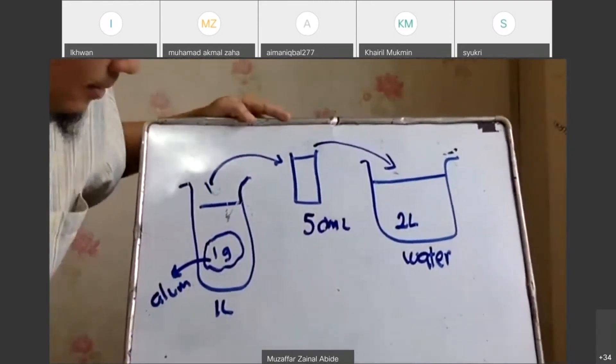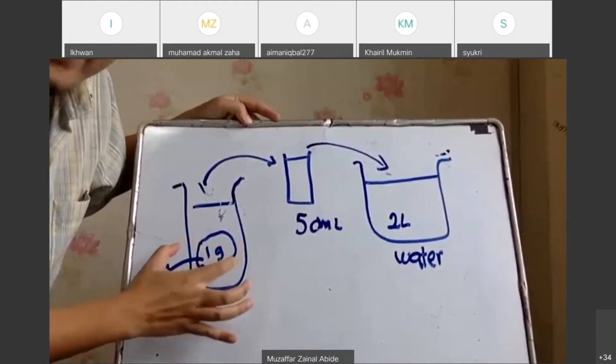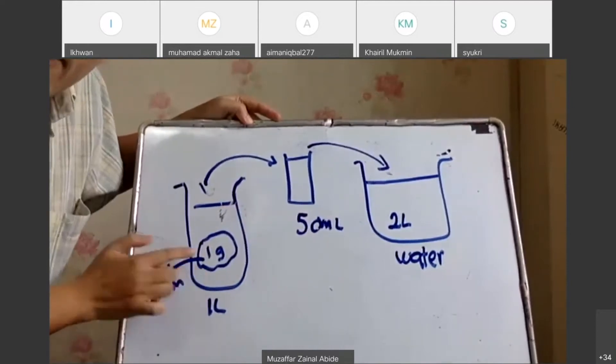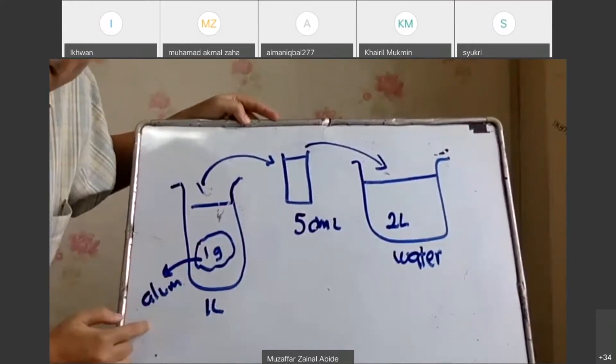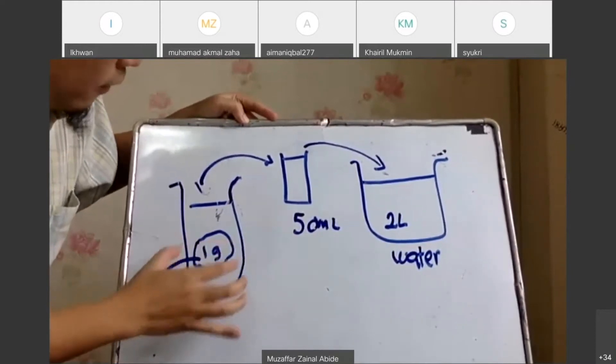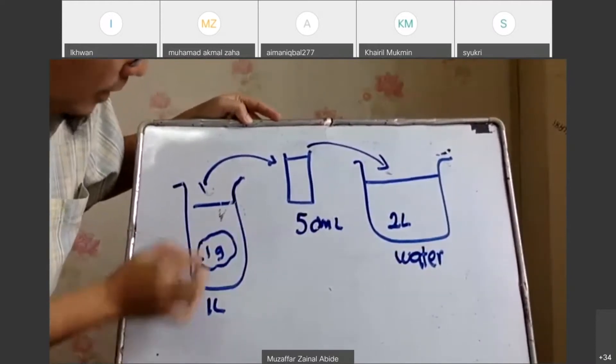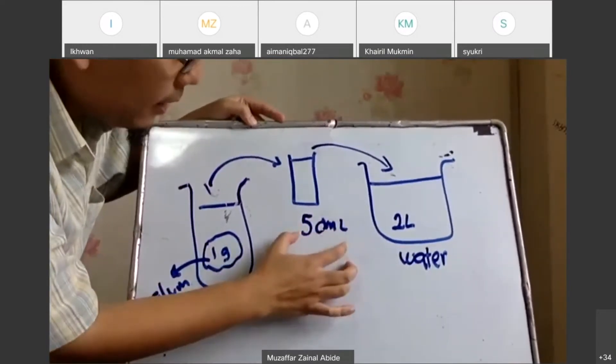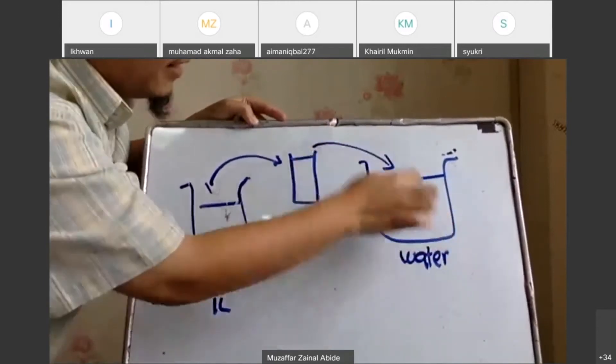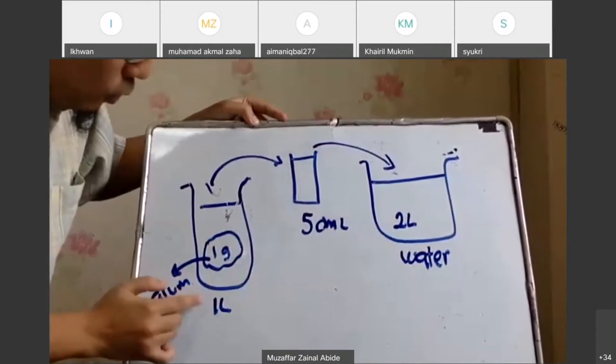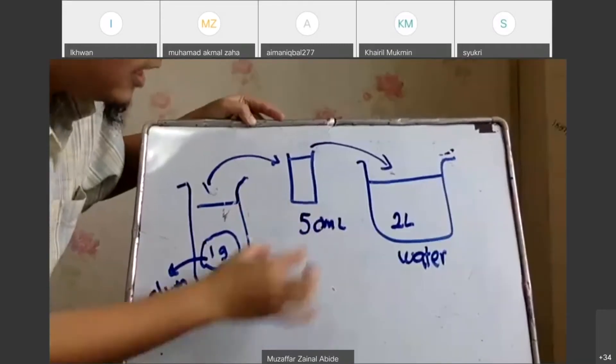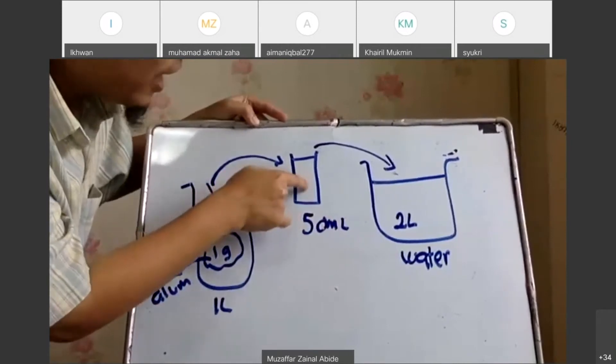It says to have a solution of 1 liter, 1 gram per liter, right? So basically what it means, you have 1 liter of water. Inside water, you have 1 gram of alum. From this solution, 1 liter has 1 gram of alum. So they take out 50 ml. And that 50 ml will be put inside or will be added inside 2 liters of water.